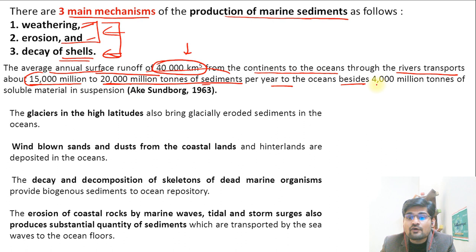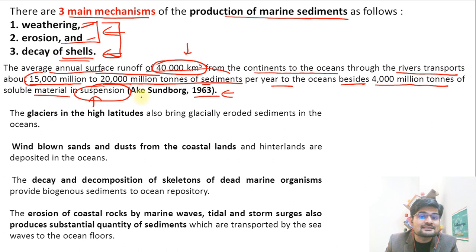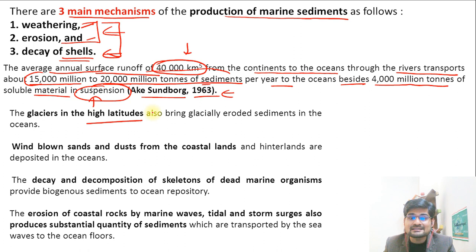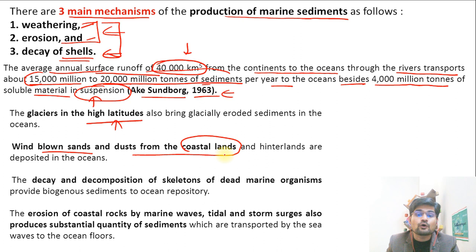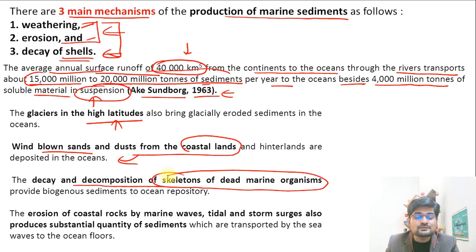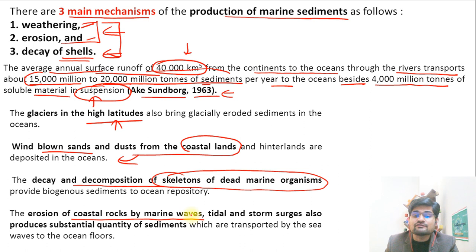Besides that, 4,000 million tons of soluble material in suspension is already in the ocean water, according to a 1963 study by Aixsonborg. Glaciers in high latitudes also contribute through glacial erosion in Arctic and Antarctic belts. Wind-blown sands and dust from coastal lands, decay of skeletal remains of dead marine organisms, and erosion of coastal rocks by marine waves, tidal storms and storm surges all contribute to sediment production.